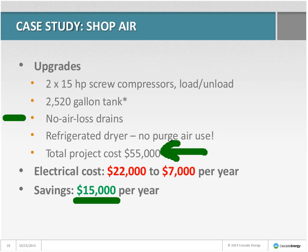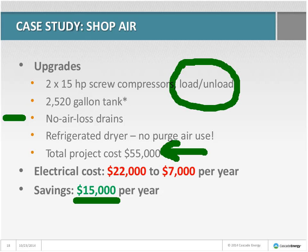These guys could have simply cleaned up the existing equipment — used load-unload control on the big 75-horse compressor and added purge controls to the desiccant dryer. But they decided this equipment was oversized, mismatched, and the wrong type of dryer, so they started over. Their air use was all indoors in a shop that never got below 50 degrees in winter, so they didn't need super-dry minus-40 dew point compressed air — the refrigerated dryer saved them a bunch of purge air consumption.